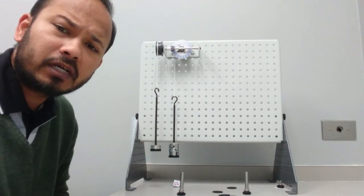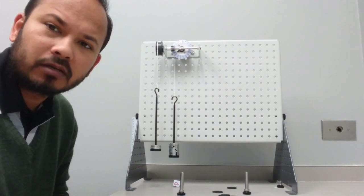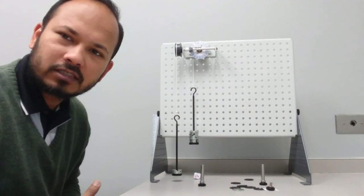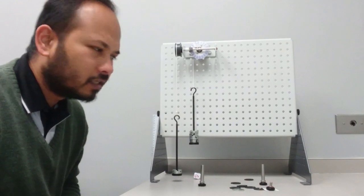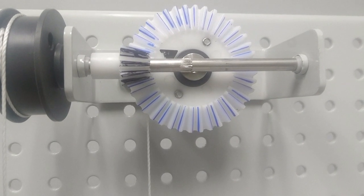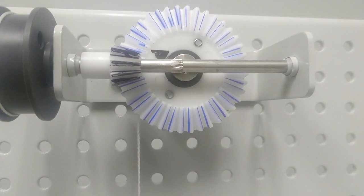Today we're going to do an experiment on bevel gears. So what is a bevel gear and what are some applications of bevel gears? Bevel gears are rotating wheels that have their teeth facing away from the side of the wheels at an angle.